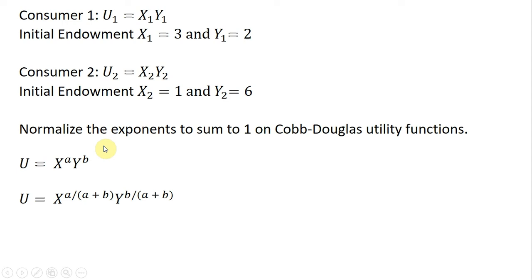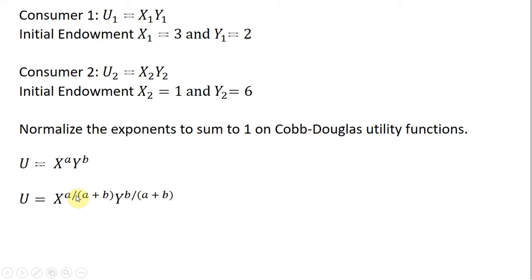Since we're dealing with Cobb-Douglas utility functions, we can normalize the exponents to sum to 1. In general, if the utility function has good x raised to the power a and good y raised to the power b, you do the following: x is raised to a divided by a plus b, and y is raised to b divided by a plus b.